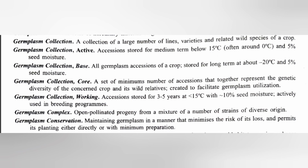Core collection: a set of minimum number of accessions that together represent the genetic diversity of the concerned crop and its wild relatives, created to facilitate germ plasm utilization. Working collection: accessions stored for three to five years at less than 15 degrees Celsius with approximately ten percent seed moisture.